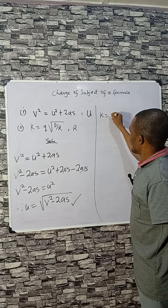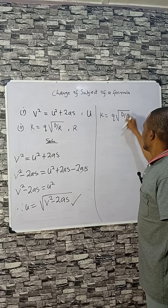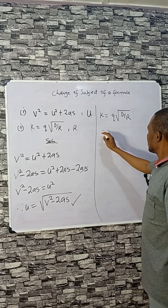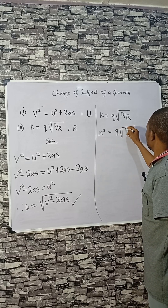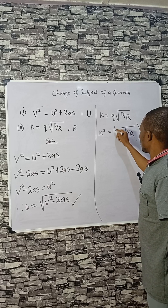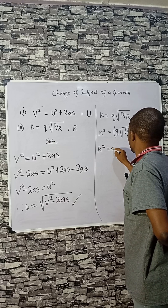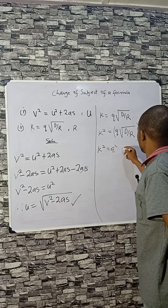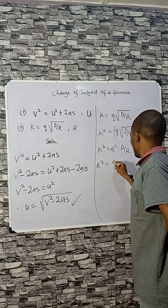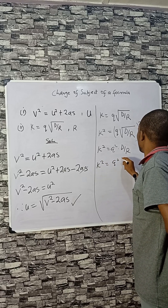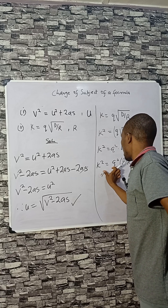For this one, we have to make r the subject. k equals qd divided by r. What you need to do is take the square of both sides. So k squared equals q times d divided by r. Taking the square of both sides gives k squared equals q squared.